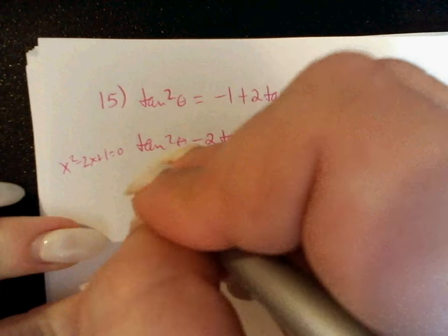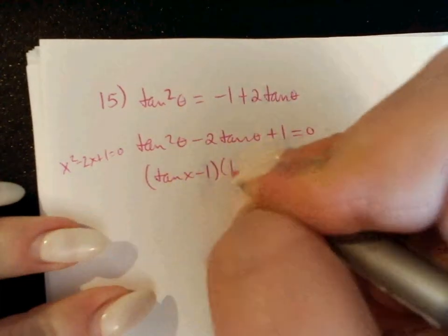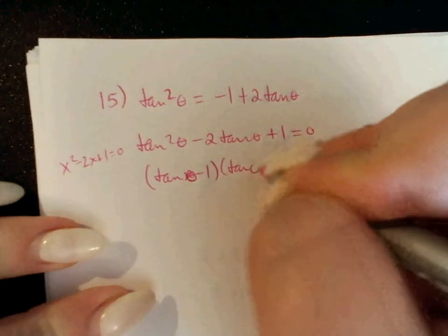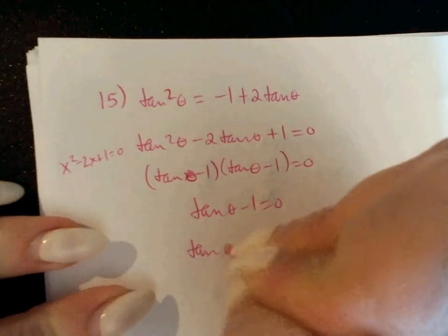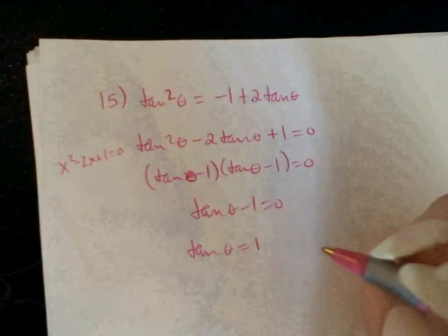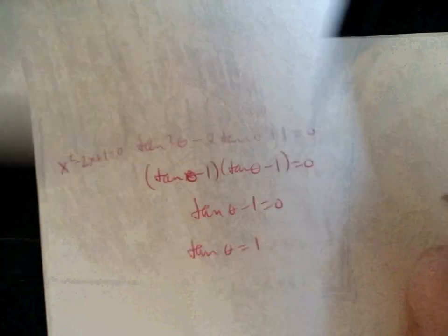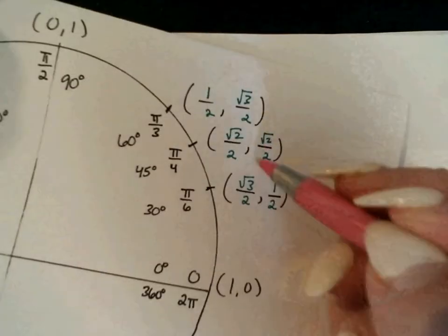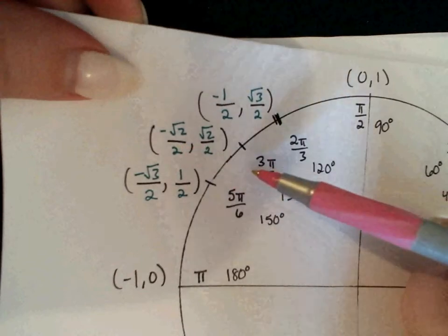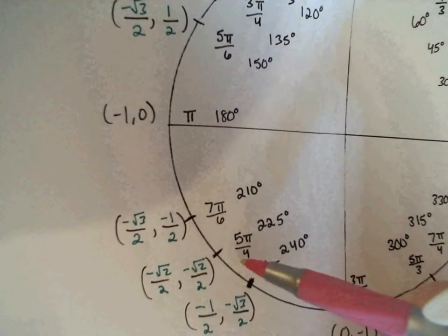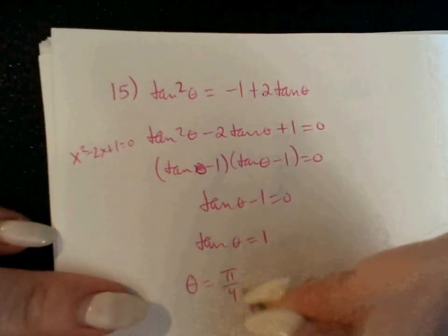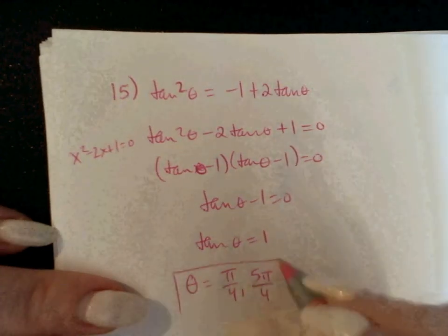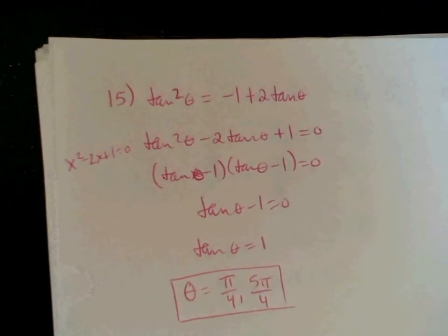That factors as tangent minus 1, times tangent theta minus 1. So we're solving when tangent theta minus 1 equals 0, which is the same as when tangent equals 1. Here we're only looking at when tangent equals positive 1. Tangent equals positive 1 at π/4 and at 5π/4. It equals negative 1 at 3π/4 and 7π/4, so we're looking at π/4 and 5π/4. And those are the odds for the homework.